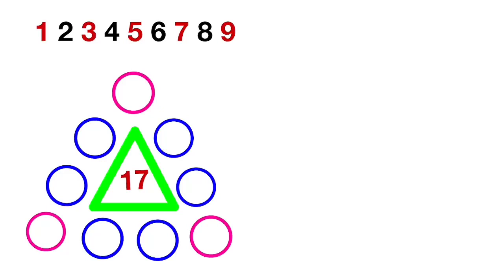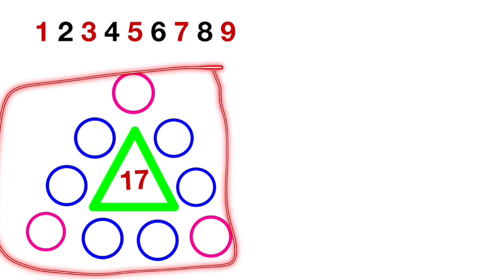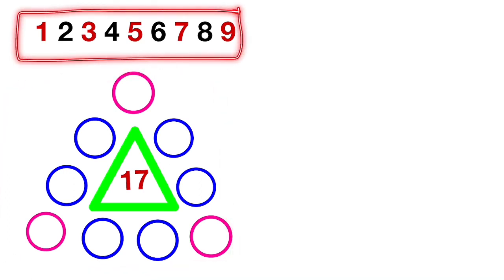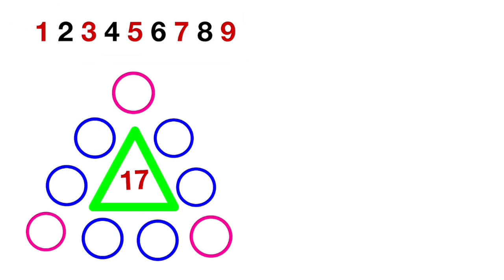Hey everyone, welcome back to another interesting video. In this video we are going to solve this magical triangle. Here we have given nine numbers or digits and we want to place them in these circles such that the sum of the lines—this line, this line, and this line—when we place the digits, the sum is 17. So let's see how we can do this.